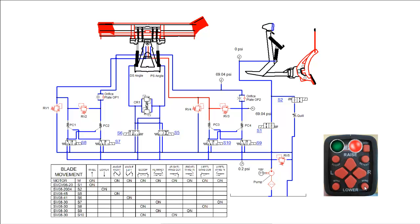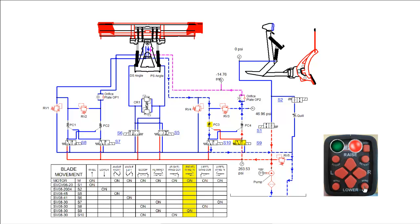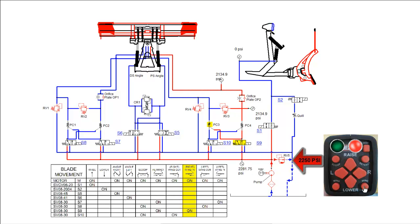We will now perform the right wing retract function. We begin by pushing the right wing button on the snowplow control. Hydraulic fluid from the pump flows through the shifted S9 cartridge, through PC4, applying pilot pressure to PC3, through the orifice to the rod end of the right wing ram. The retracting ram pushes the return fluid through the base end of the ram, through PC3, S10, and back to tank. When fully retracted, the pump pressure will build to the RV5 pump relief valve setting and directly back to tank.